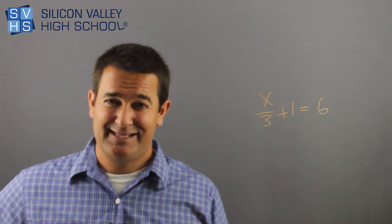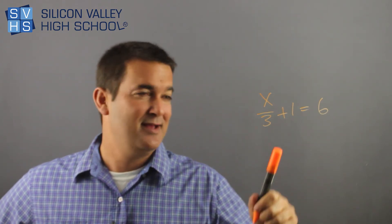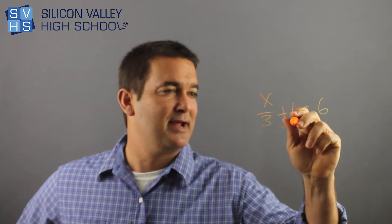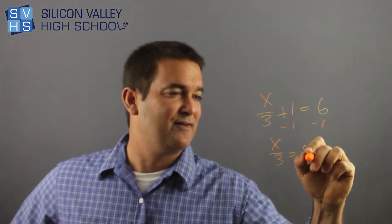Again, the stuff attached to the x I'm going to do last. So the first you have to do is get rid of this annoying 1. The opposite of plus 1 would be minus 1 to both sides of the equation. Then you have x over 3 equals 5.